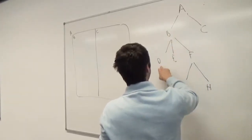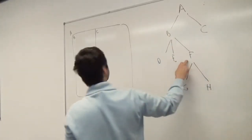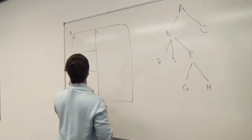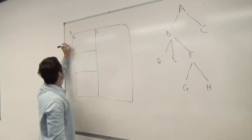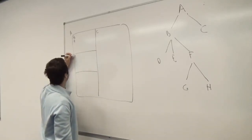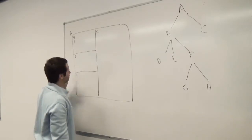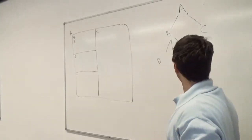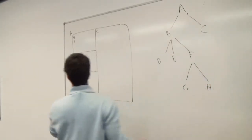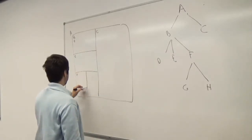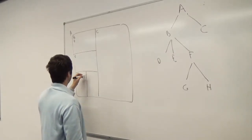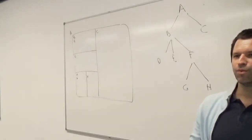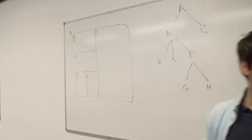So B gets subdivided by D, E, and F. So that's three children — D, E, and F. And then F is subdivided by G and H. So I'm just going to drop it like that — G and H.